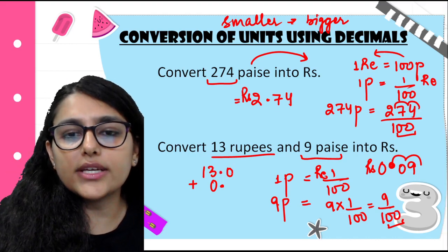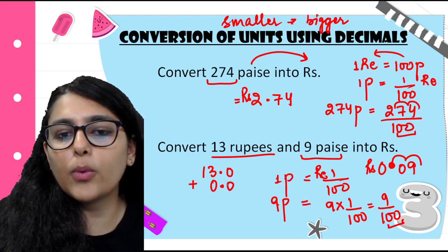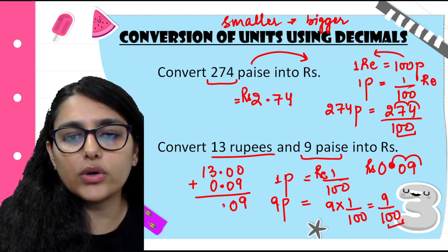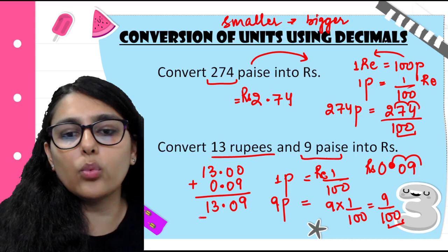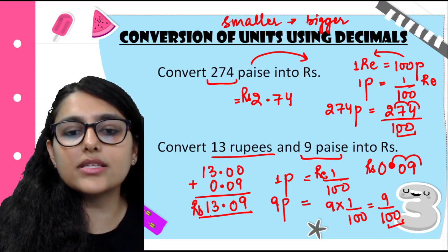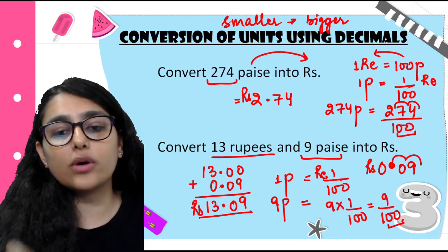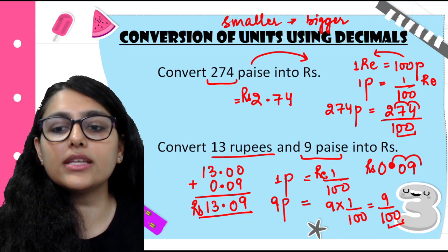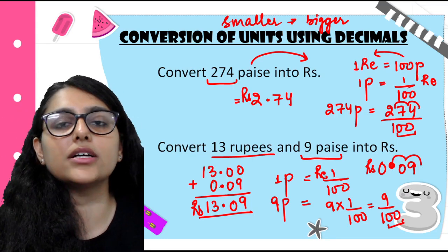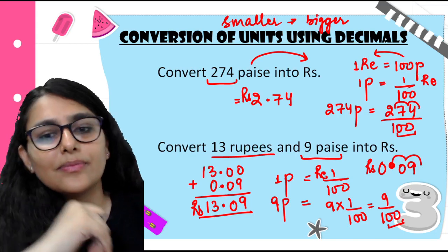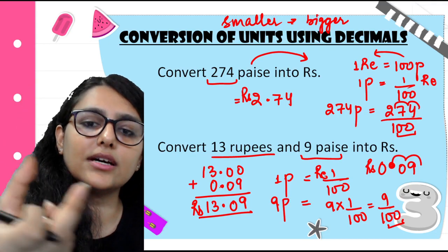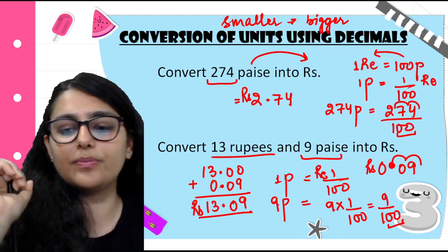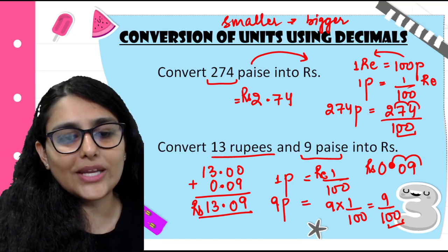Adding 13.0 and 0.09: 9, 0, decimal, 3, and 1 — so the answer is rupees 13.09. This complete answer is in rupees. Previously it was 13 rupees and 9 paise — now we can say it is 13.09 rupees. That automatically means 13 full rupees and 0.09 rupees remaining.